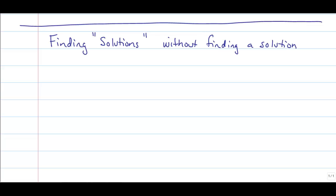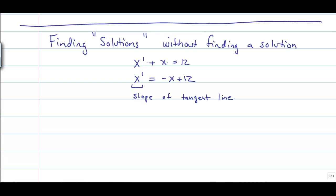Let's start with this example: x prime plus x equals 12. Solving for x prime, if we remember the first derivative is just the slope of the tangent line, we can get an idea of what happens to the solution. If the slope is positive, that is if x prime is positive, we have an increasing function. If x prime is negative, our function or solution will be decreasing.